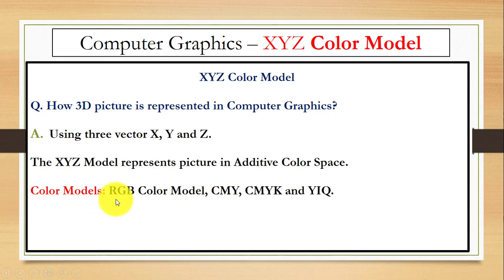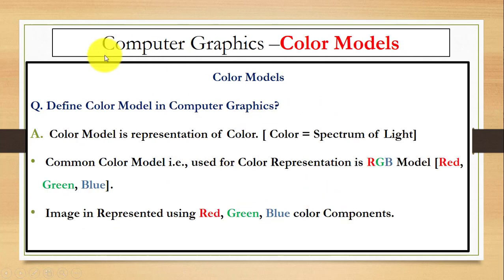For example, we have different color models like RGB, CMY, CMYK, and YIQ. First is defining color model, that is what we are using for the representation of color. Color is the spectrum of light.